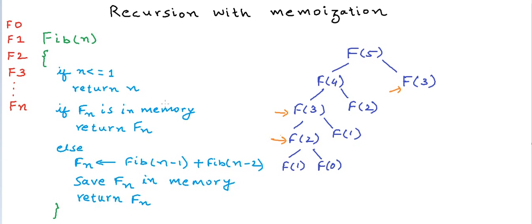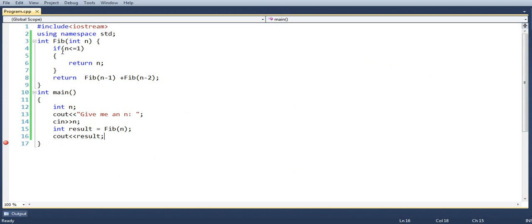So this is recursion with memoization. Let's now see in some real code how this works. I will write some C++ for you. So here we have a simple recursive implementation of Fibonacci sequence in C++. We have this method fib. This is the base condition.